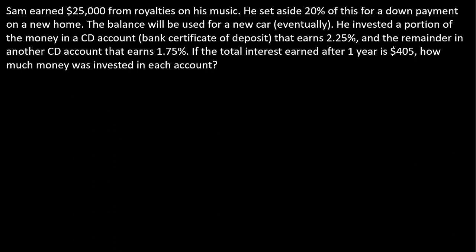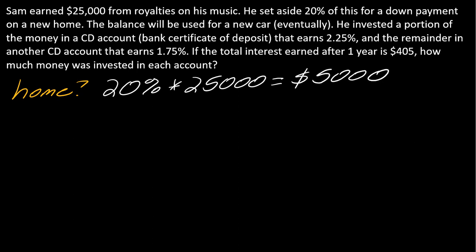This has a lot going on. First things first - 20% of this money is being set aside for a down payment for a home. How much is going to the home? You would take 20% of the $25,000. If you calculate that, that is $5,000 set aside for the down payment. The rest of that $20,000 - remember the first $5,000 went to the home.